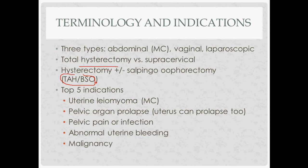Indications for hysterectomy: the most common is uterine leiomyoma — alternatives include uterine artery embolization and myomectomy. Pelvic organ prolapse — alternatives include a pessary or pelvic floor strengthening exercises. Pelvic pain or infection, such as endometriosis — a GnRH analog is an alternative. Bleeding — endometrial ablation can be tried. For malignancy, conization or a less invasive approach depending on grade.